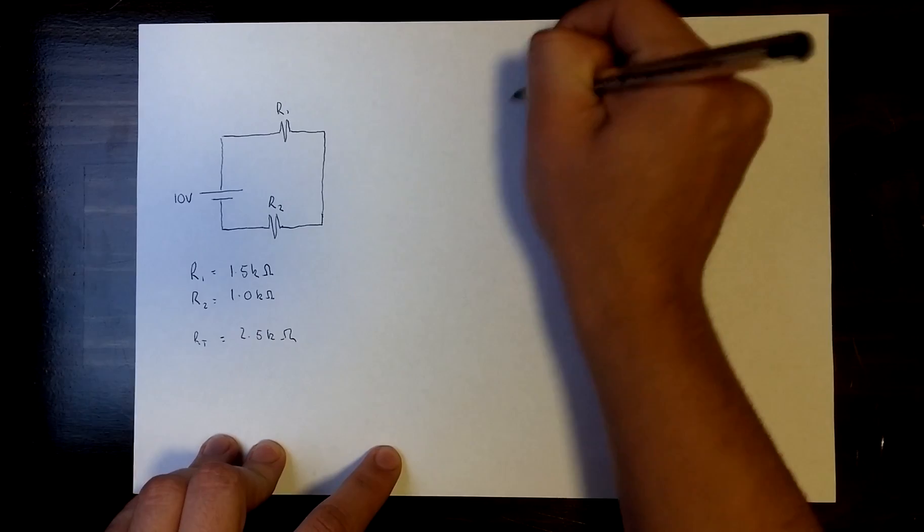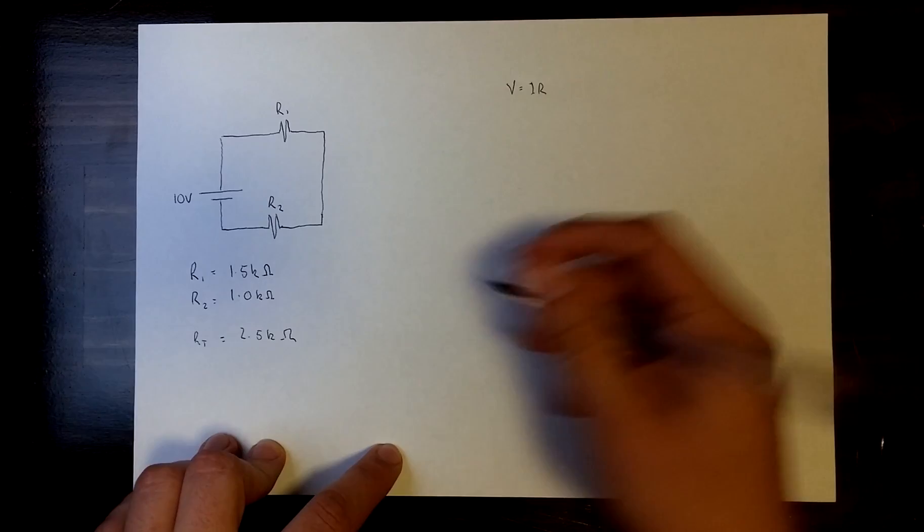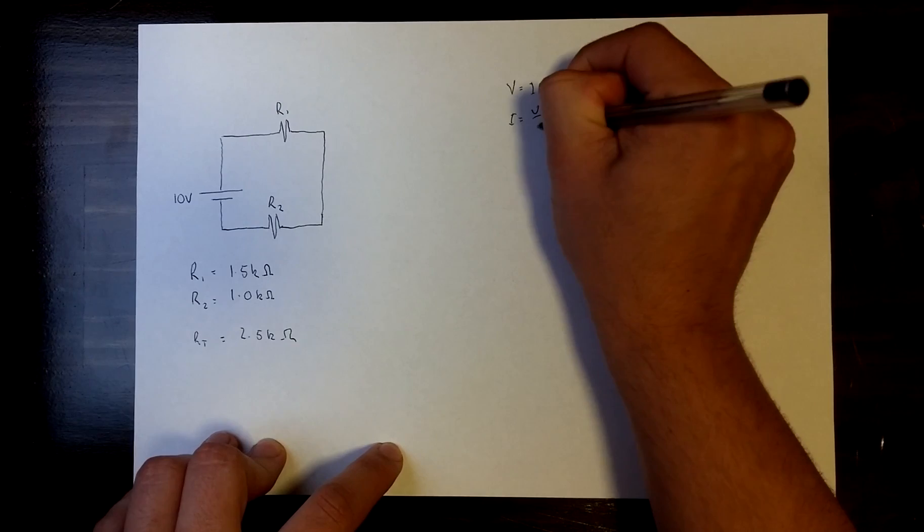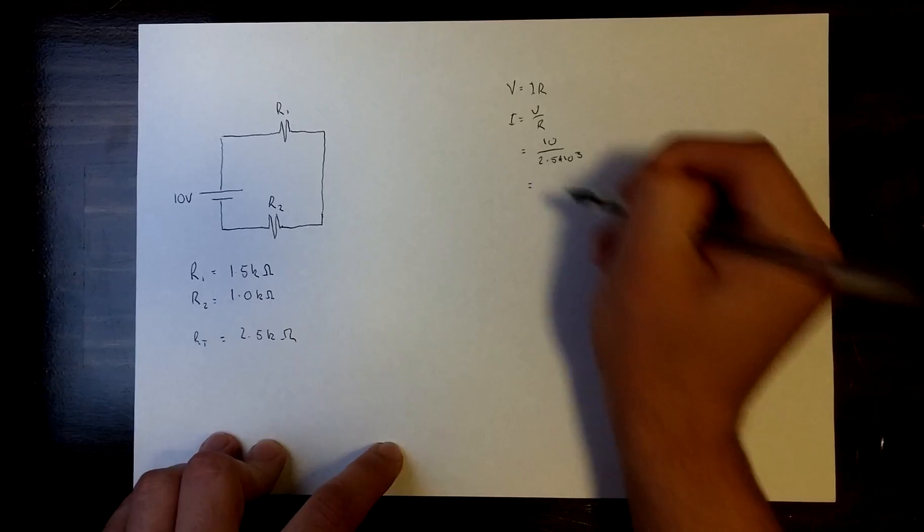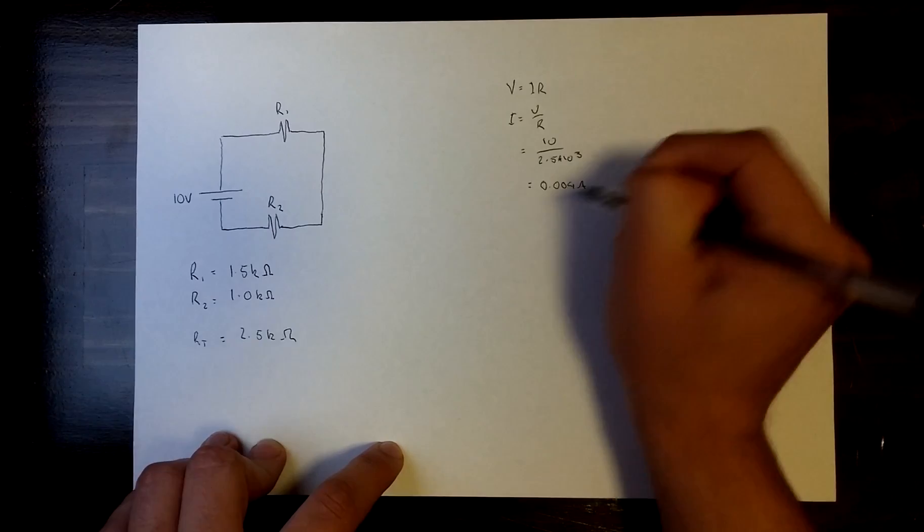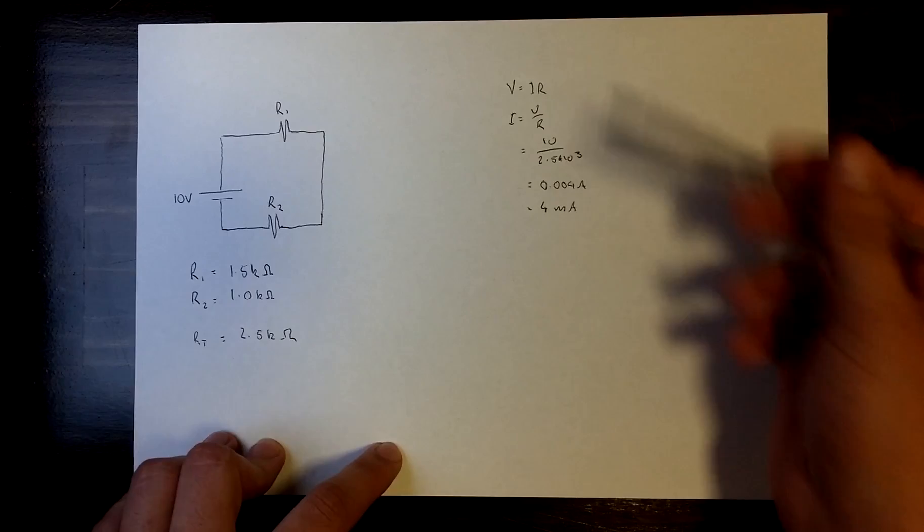We're able to use V equals IR and rearrange that to find I in this case, our current. So that means I is equal to V over R, which is equal to 10 over 2.5 times 10 to the 3. That comes out to equal 0.004 amps or 4 milliamps.